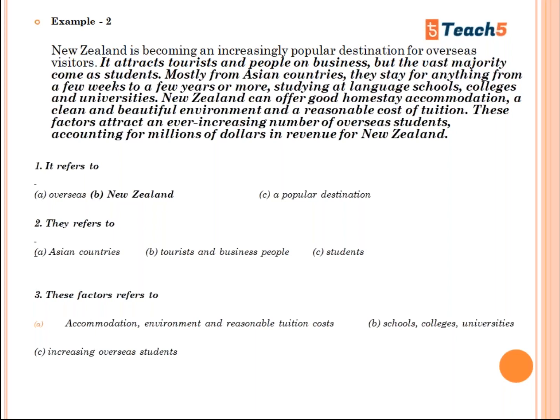Now let's see what 'they' refers to. 'It attracts tourists, but the vast majority come as students, mostly from Asian countries. They stay for anything from a few weeks.' So 'they' is referring to what? 'They' is referring to tourists and business people — it attracts tourists and people on business.